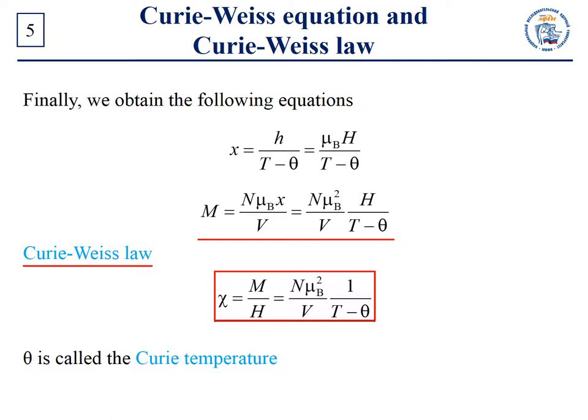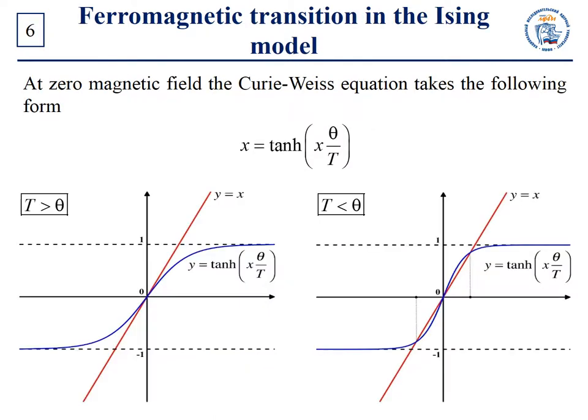Note that if the exchange interaction is absent, then θ is equal to zero, and we obtain the Curie law. The value θ is called the Curie temperature. From the temperature dependence of magnetic susceptibility at high temperatures, one can see that the value of χ diverges as the temperature tends to θ.